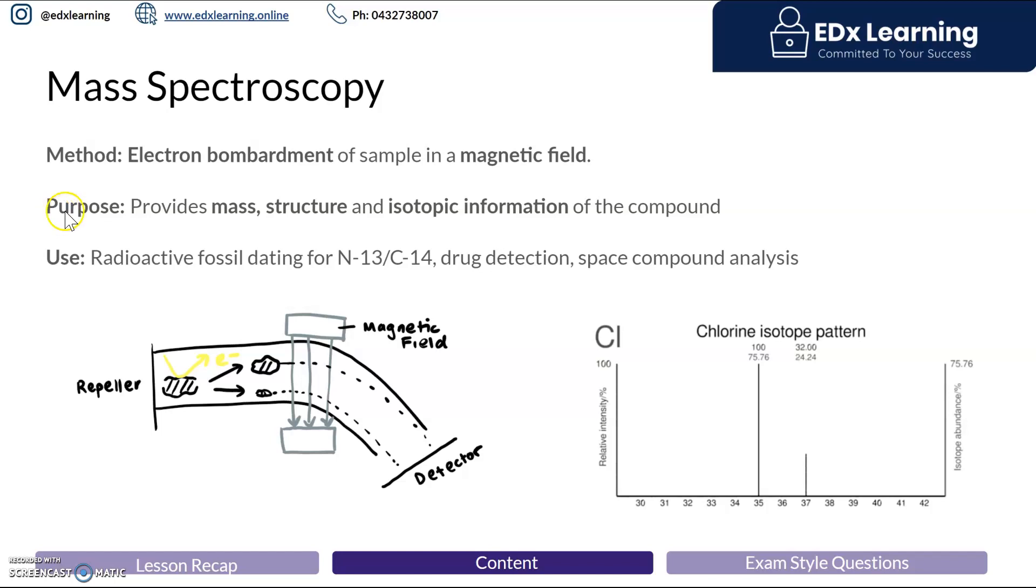The key take-home message with mass spec is we bombard an organic sample with electrons. Recall spectroscopy is the study of how energy and matter interact. Mass spec is also called mass spectrometry because this is a destructive form of testing. When electrons bombard the original sample, it fragments into two smaller ions.